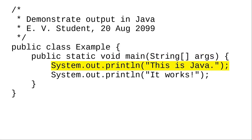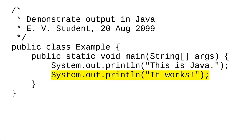The body of the main method consists of two lines that both make calls to the system.out.println method. This method takes a string as its argument and prints it to the output on a line all by itself. The 'ln' at the end means print and give a new line. The string must be in double quotes. The semicolon at the end of the line is required — it tells Java that the statement is finished. The next line is another statement that prints another string, and it also needs a semicolon at the end.